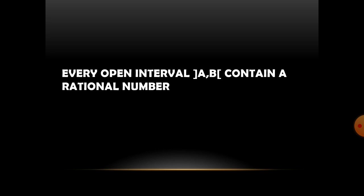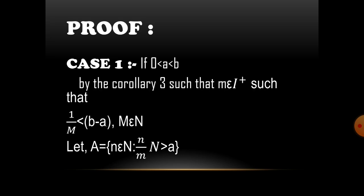The proof of the theorem: Case 1, if 0 < A < B, by Corollary 3. In our theorem, Corollary 3 states if epsilon is greater than 0, then there exists a positive integer N such that 1/N is less than epsilon. By using Corollary 3, we solve Case 1.